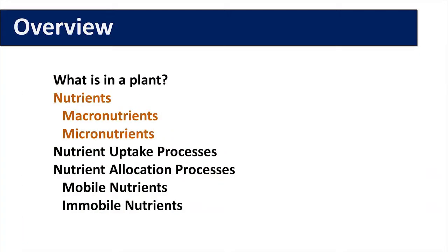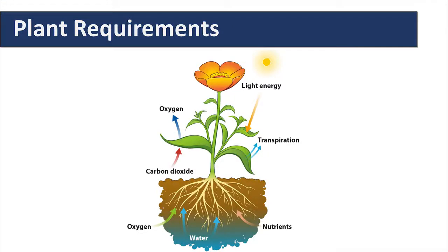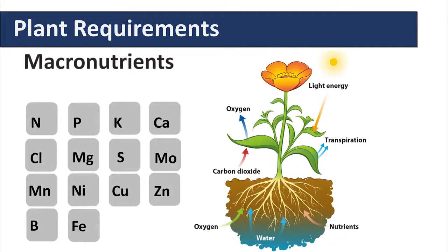Next we will talk about essential nutrients and their role in plant growth. The plant is required to have carbon in the form of carbon dioxide and oxygen, and they come from the atmosphere and the soil pore spaces, which also contain water, oxygen, and plant nutrients. Nutrients are often split into two categories: macronutrients and micronutrients.